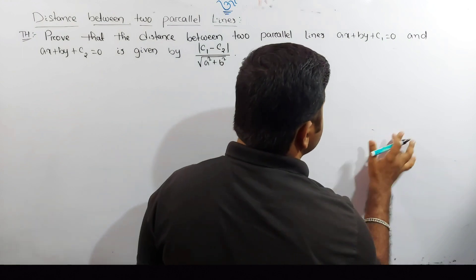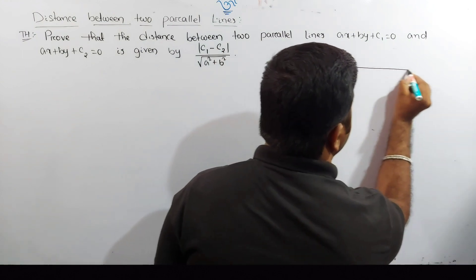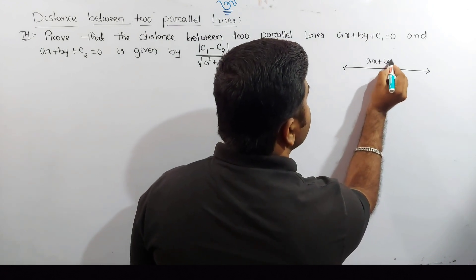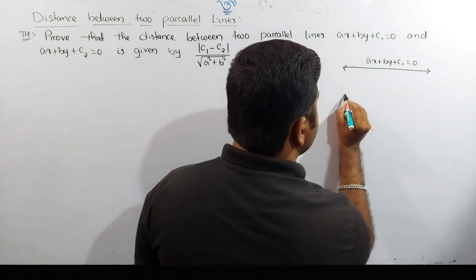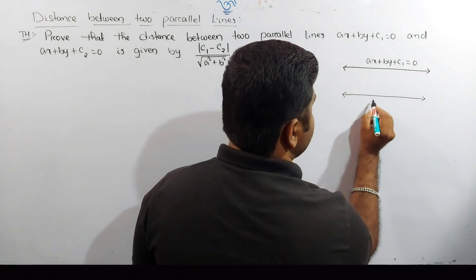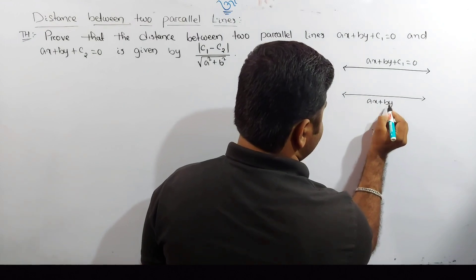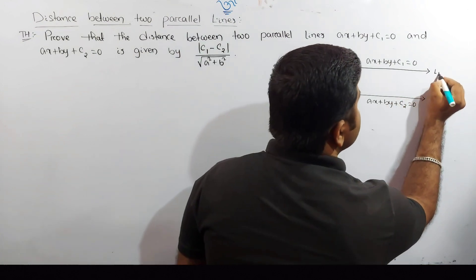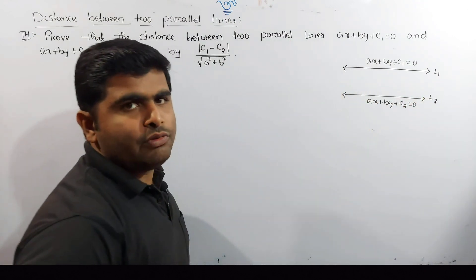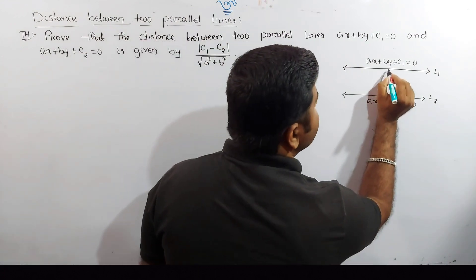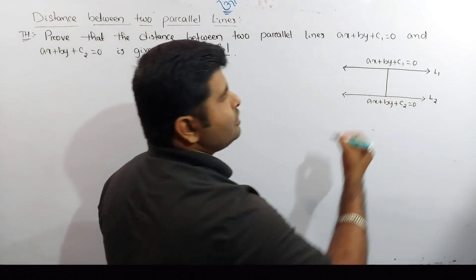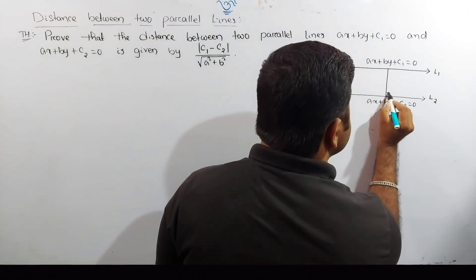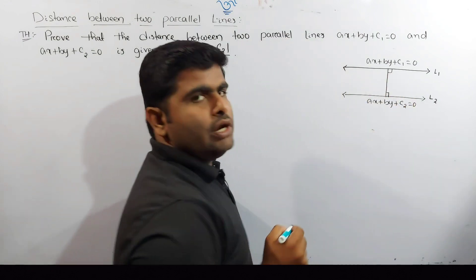First, let's draw the lines. This is the first line — suppose this is ax + by + c1 = 0. This is the second line — suppose this is ax + by + c2 = 0. Let them be line 1 and line 2. To check the theorem, we need to take a perpendicular from line 1 to line 2.